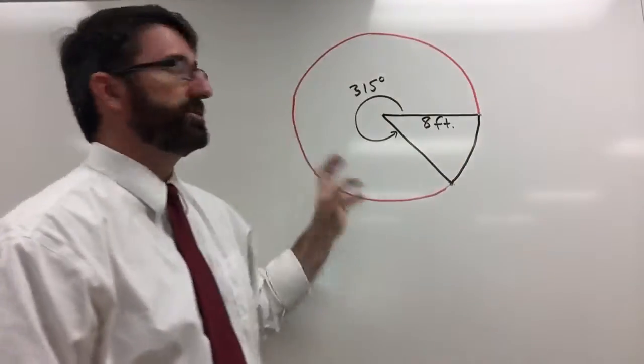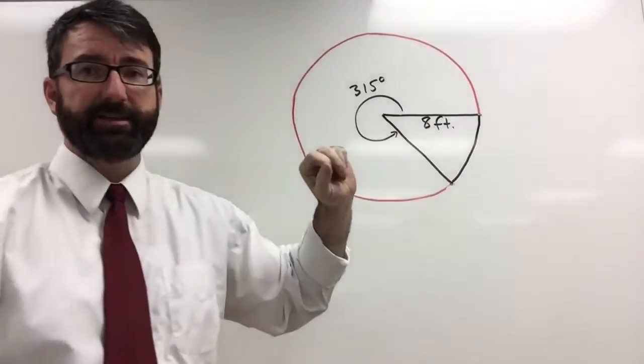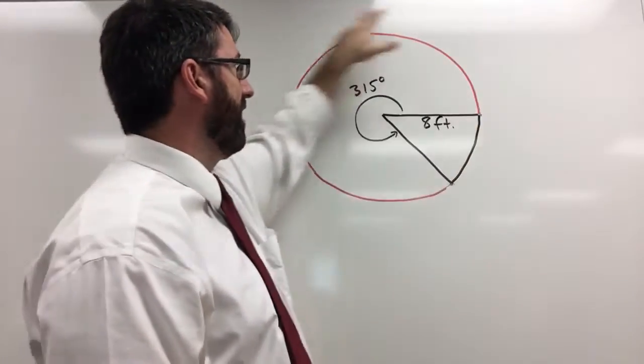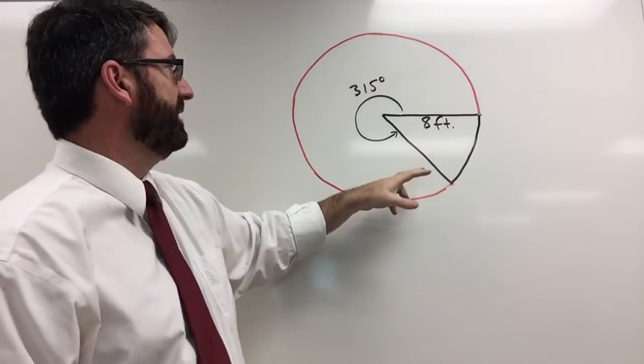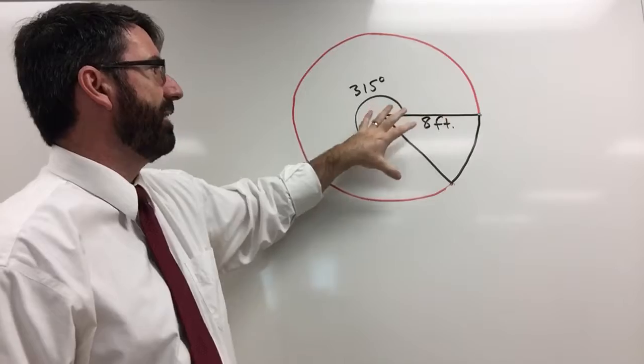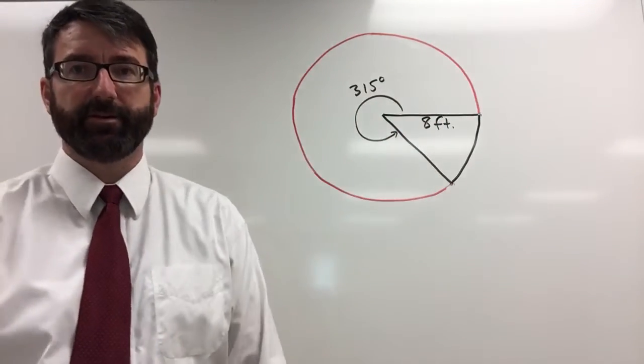Alright, for this problem we're given a circle with a radius of 8 feet, and we're asked to find the arc length that's going to be created if we cut out of this circle an angle of 315 degrees.